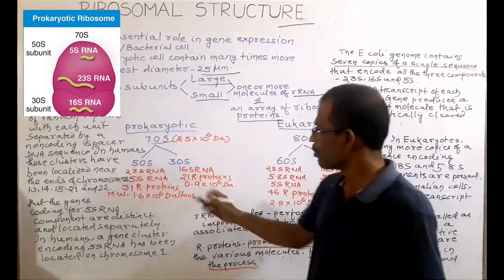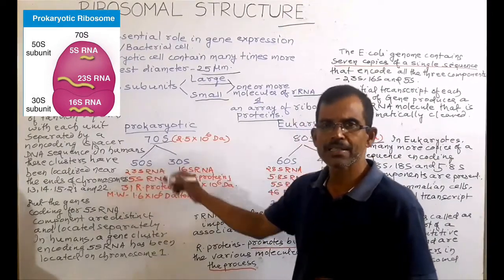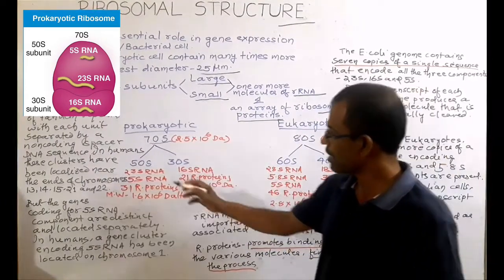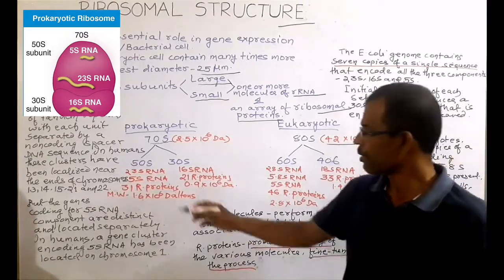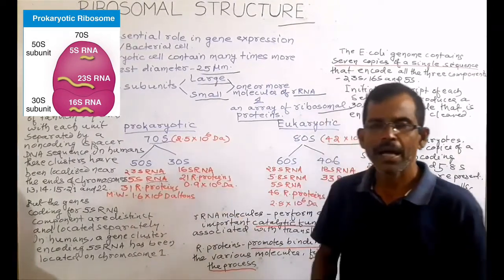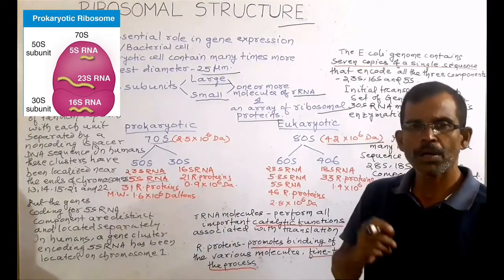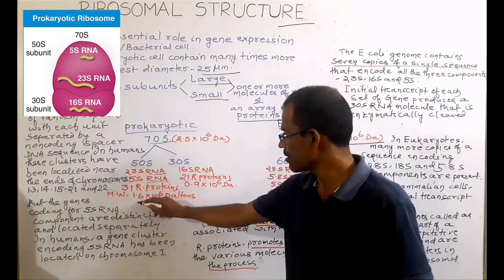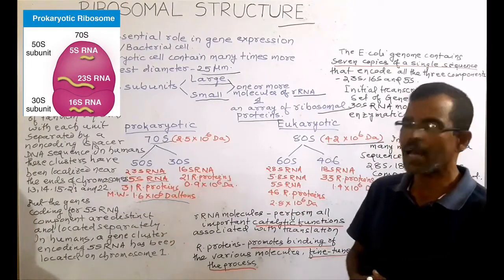Prokaryotic ribosome consists of two unequal subunits: a larger 50S subunit and a smaller 30S subunit. The 50S subunit consists of a molecule of 23S RNA, 5S RNA, and 31 ribosomal proteins. The approximate molecular weight of the 50S subunit is 1.6 × 10^6 Dalton.